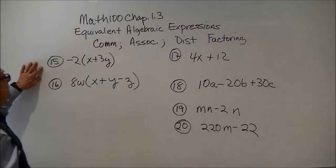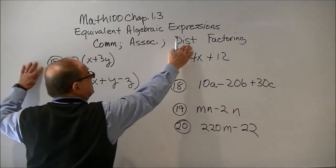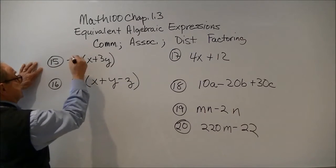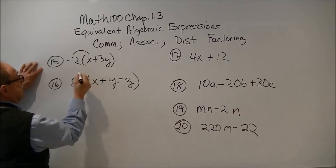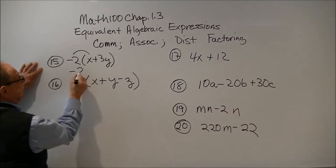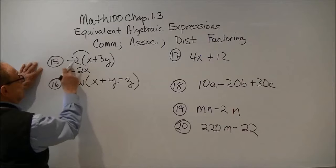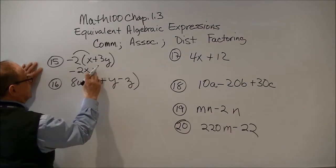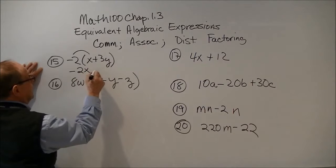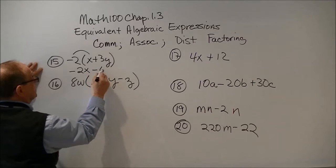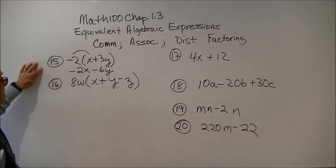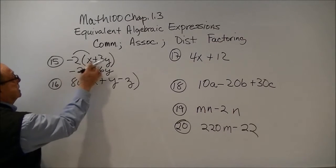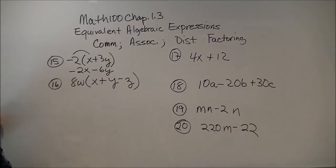Okay, continuing on number 15, they're asking us to use the distributive principle. And we need to watch the sign. That's going to be a negative 2x. Now a negative 2 times 3, that's going to be a negative 6y. And check your work. This times this, negative. This times this, negative. That's good.